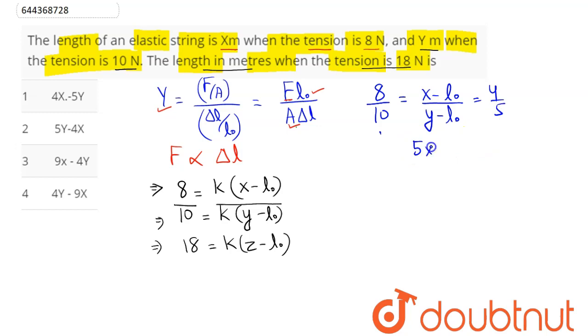So this simplifies as 4 by 5, so this becomes our 5X minus 5 L0 is equal to 4Y minus we have here as 4 L0. So this becomes our 5X minus 4Y is equal to our L0, that is original length.